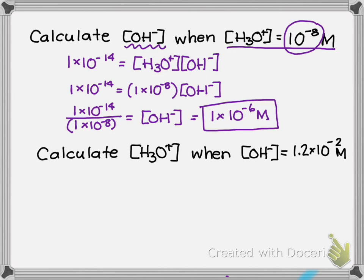You can also do this mentally using exponent rules. Divide the coefficients: 1 divided by 1 is 1. Then for division, subtract the exponents: negative 14 minus negative 8 gives negative 6. So the answer is 1×10⁻⁶ — the same result you'd get from your calculator.